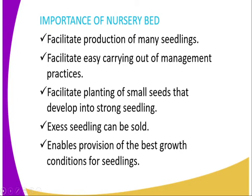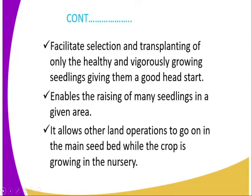For example, you can have a shade structure constructed above the nursery bed to reduce the rate of transpiration, meaning the seedlings will continue growing well. Additionally, a nursery bed facilitates selection and transplanting of only the healthy and vigorous seedlings, giving them a good head start. The big seedlings on the nursery bed are uprooted and transplanted to the main seed bed, while the younger ones are left to continue growing.